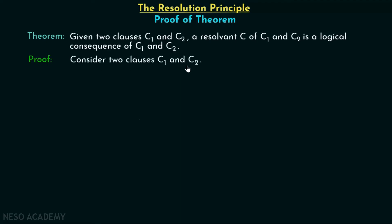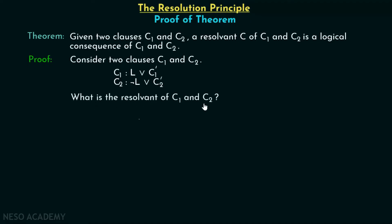Consider two clauses C1 and C2. Let C1 be L or C̄1, and C2 be ¬L or C̄2. We have these two literals L and ¬L — C1 has L and C2 has ¬L. C̄1 and C̄2 represent the remaining literals. The resolvent of C1 and C2 will be C̄1 or C̄2, because L and ¬L get cancelled.